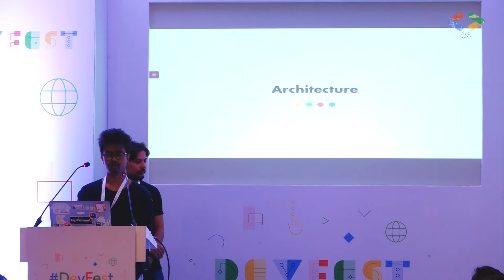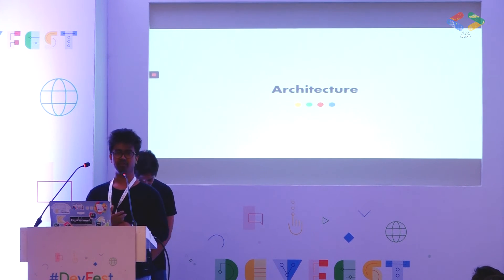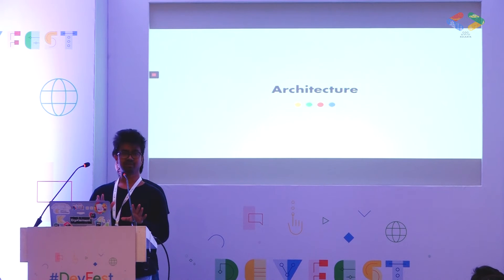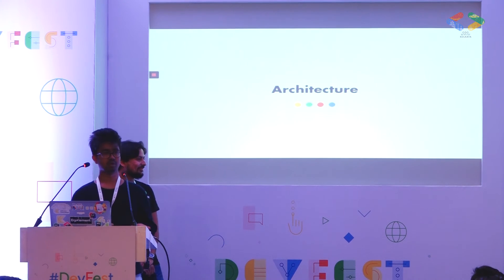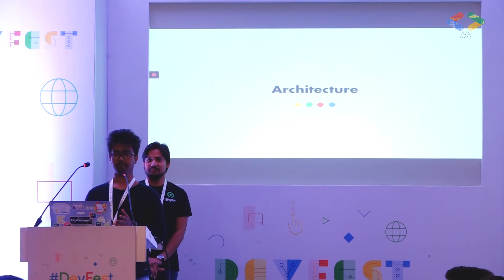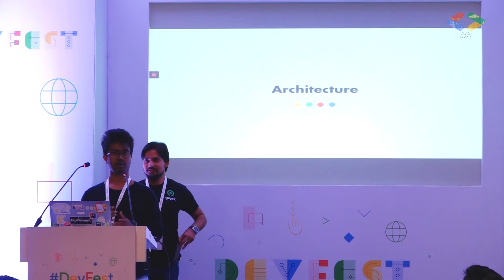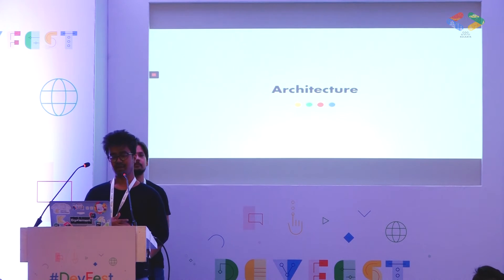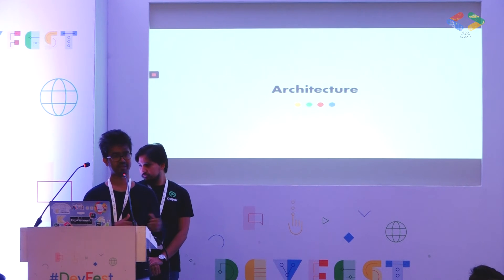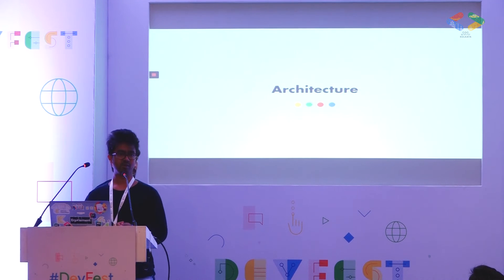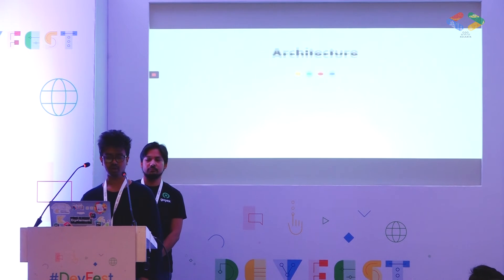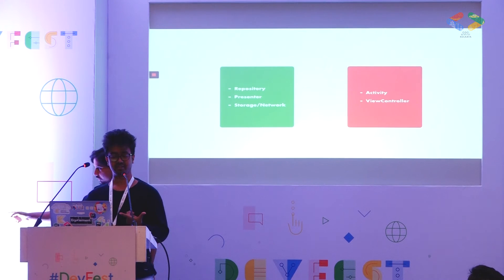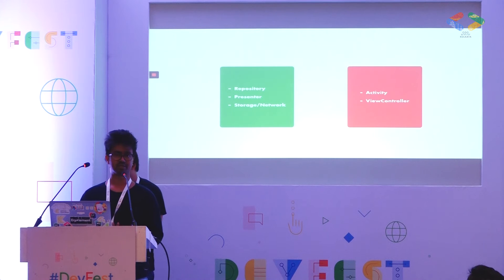Let's talk about architecture. What architecture should you choose when building a multiplatform application? The truth is you can use any architecture of your choice — MVP, MVVM, MVI — as long as your business logic is not tied to your UI and you can unit-test it separately. For this example we're going to use Model-View-Presenter, but any MVSTAR architecture will work fine. We will share our repository, presenters, and storage and network layers across platforms, but we won't share activity view controllers or any UI-related code.